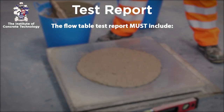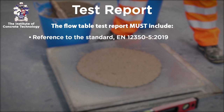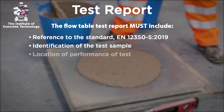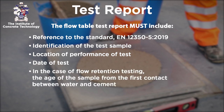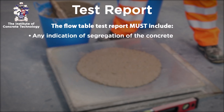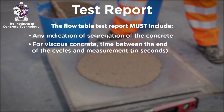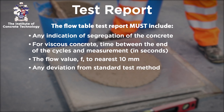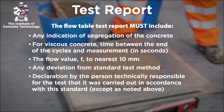The following information must be reported on completion of the test: reference to the standard EN 12350 Part 5; identification of the test sample; the location of performance of the test; the date of the test; in the case of flow retention testing, the age of the sample from the first contact between water and cement; any indication of the segregation of the concrete; for viscous concrete, the time between the end of the drop cycles and measurement of the spread in seconds; the flow value F to the nearest 10 millimetres; any deviation from the standard test method; and a declaration by the person technically responsible for the test that it was carried out in accordance with the standard except as noted above.